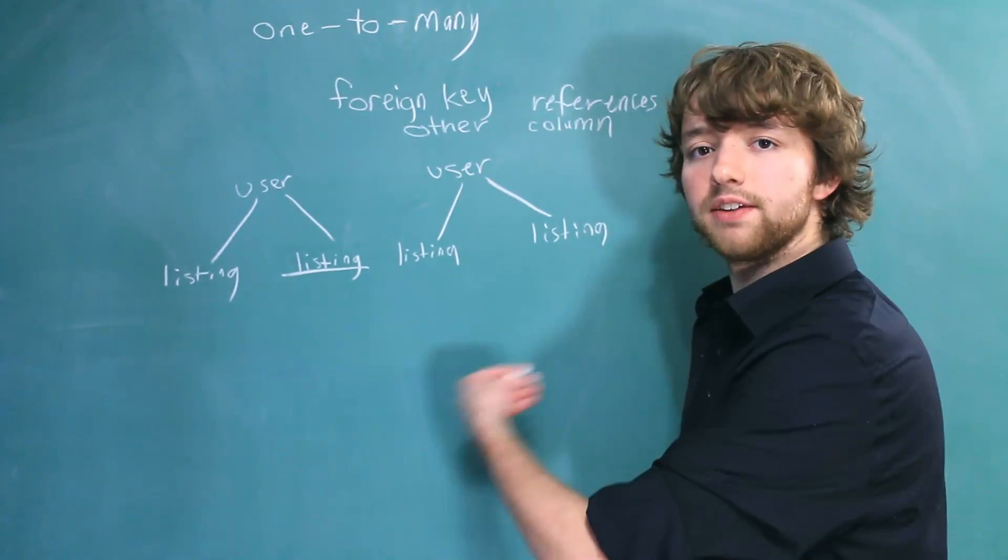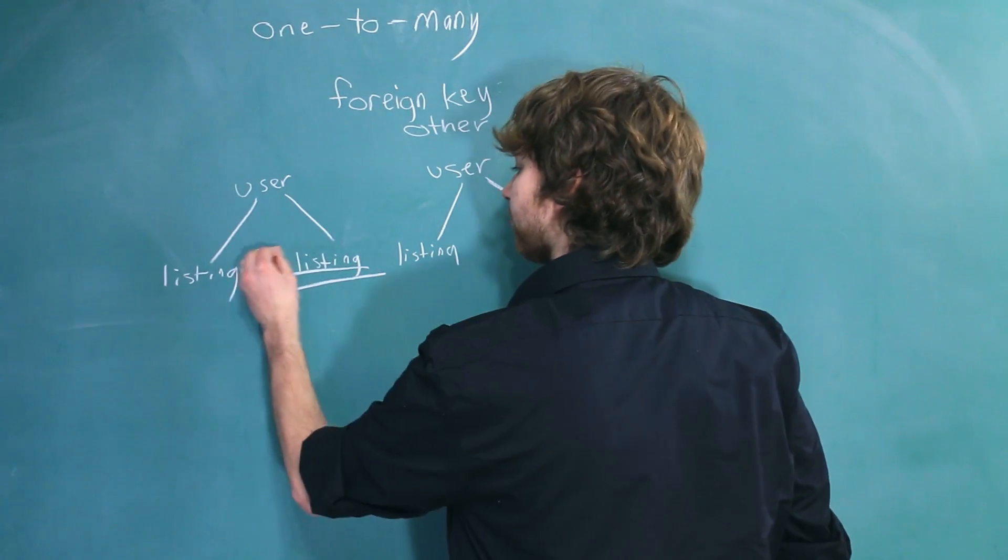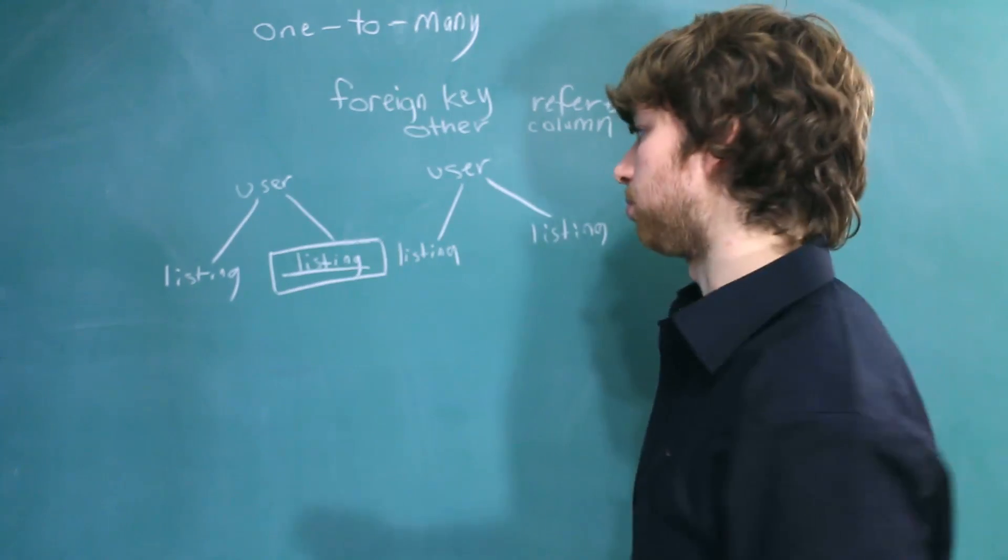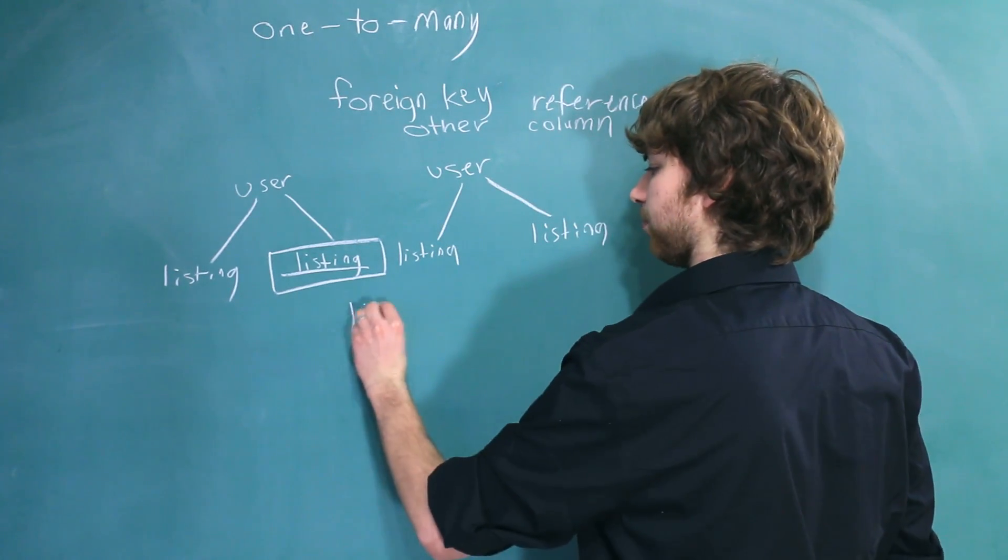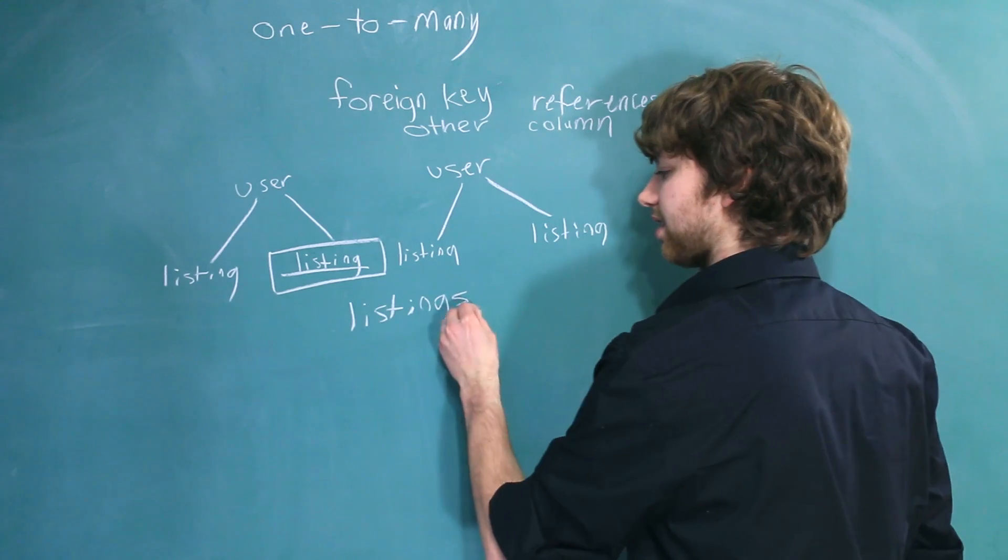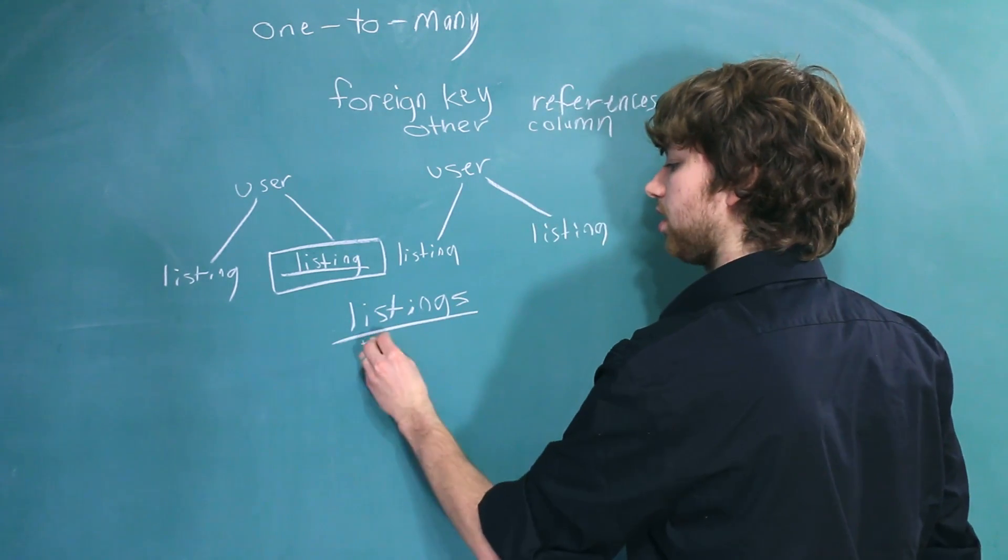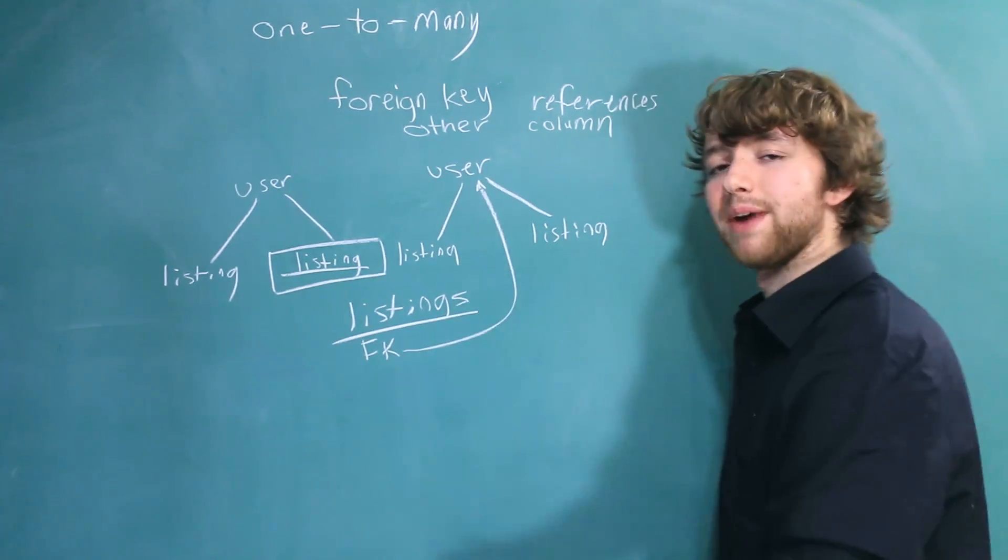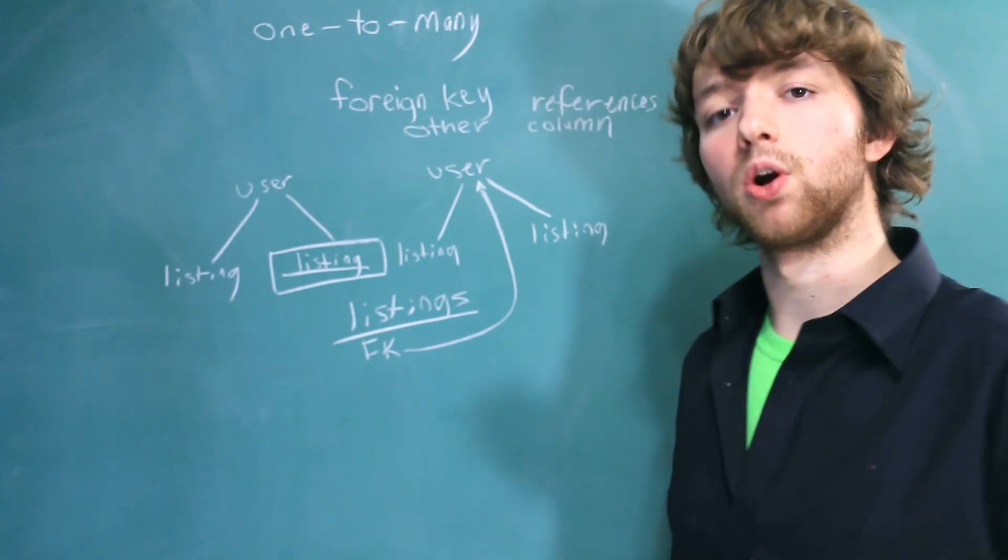When you have this kind of setup, the thing that is being referenced multiple times is going to be put in its own table. So you would literally just create a listing table. It's pretty simple. This listing's table is going to have a foreign key column that references the user. So let's draw this out with some actual data. That way it's a little bit more concrete.